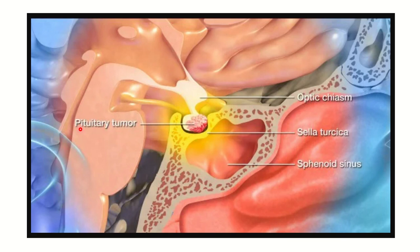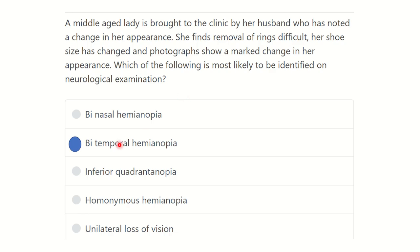Here we can see the pituitary gland and a pituitary tumor. The optic chiasm is located just above the pituitary gland, so any tumor in the pituitary gland may compress the optic chiasm from below and cause a neurological deficit. The optic nerve passes through the optic chiasm, and compression of this structure results in bitemporal hemianopia.